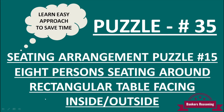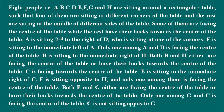The puzzle is: 8 people — A, B, C, D, E, F, G and H — are sitting around a rectangular table such that 4 of them are sitting at different corners of the table and the rest are sitting at the middle of different sides. Some of them are facing the center of the table while the rest have their backs toward the center of the table.